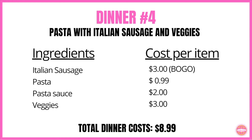Dinner number four is pasta with Italian sausage and veggies. They had the Italian sausage on sale for $3 — it was buy one, get one free. Pasta on sale for $0.99, pasta sauce for $2, and you'll need some veggies — whatever you like to throw into your pasta, like green pepper, red pepper, onion, or spinach — let's say $3 for that. This total meal will cost you around $8.99.